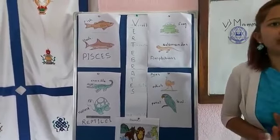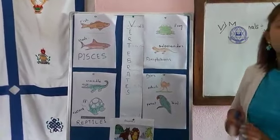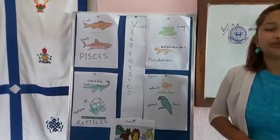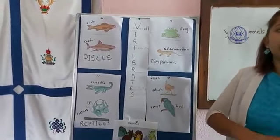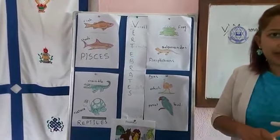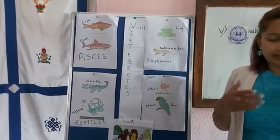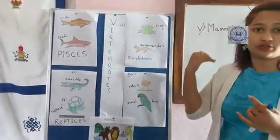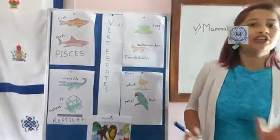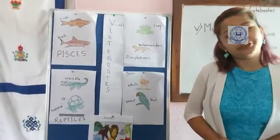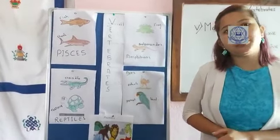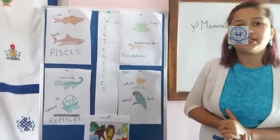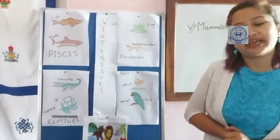I hope this is clear. Please, Grade 5, make notes of this in your copy. I have written down two characteristics per class, but you can also include 'they have a backbone' as a characteristic for each class. I will see you in my next video with a new topic — till then, stay safe, stay home. Thank you.